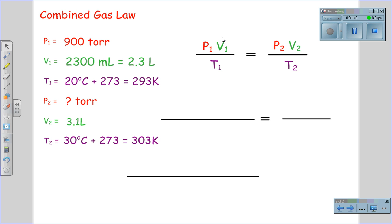Now we can set up the combined gas equation, P1 times V1 over T1 equals P2 times V2 over T2. We can now plug in the values: 900 torr times 2.3 liters, divided by the temperature, 293 Kelvin.